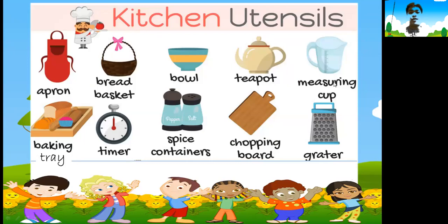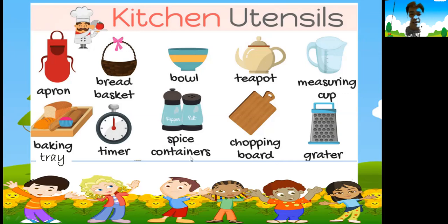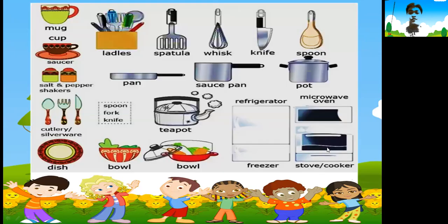We should not miss learning about kitchen utensils. Let's start with apron, bread basket, bowl, teapot — I'm a little teapot, short and stout, here is my handle and here is my spout! Measuring cup, baking tray, timer, spice containers — pepper, salt, spice. Chopping board. Grater.